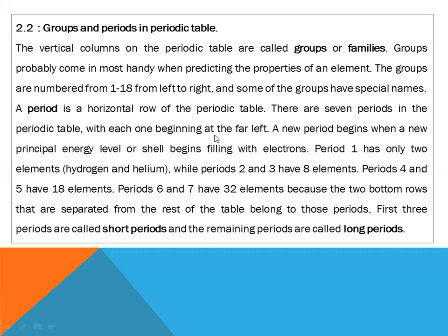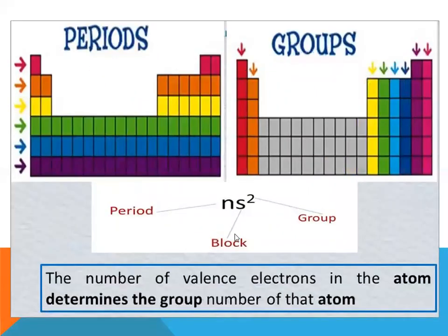A period is a horizontal row of the periodic table. There are seven periods, each beginning at the far left. A new period begins when a new principal energy level or shell starts filling with electrons. Period one has only two elements — hydrogen and helium. Periods two and three have eight elements each. Periods four and five have 18 elements. Periods six and seven have 32 elements, as the two bottom rows belong to those periods. The first three periods are called short periods and the remaining periods are called long periods.